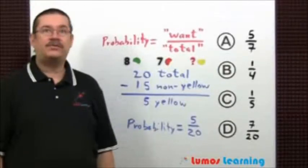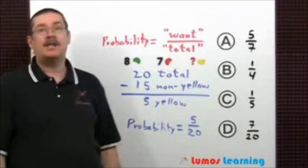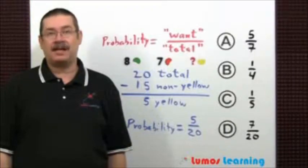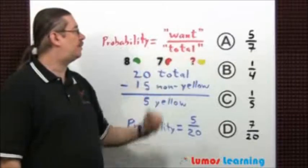To answer this question, you need to realize that probability is just the number of ways of getting what we want divided by the total number of possible outcomes, which I'm going to abbreviate as want over total.